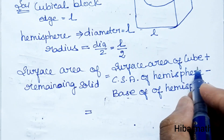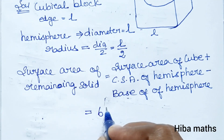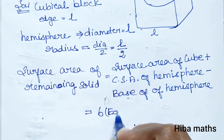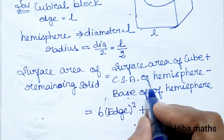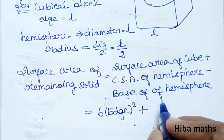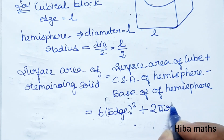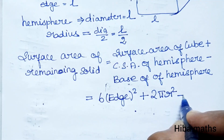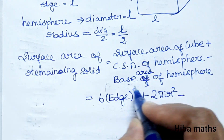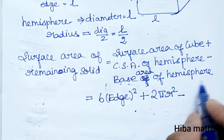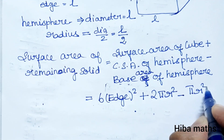Surface area of cube = 6 times edge squared = 6l². CSA of hemisphere = 2πr². Base area of hemisphere = πr², where r = l/2.